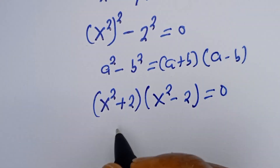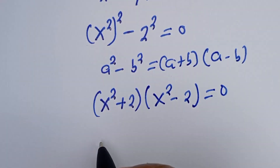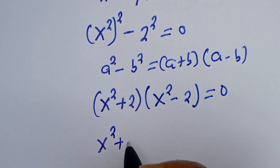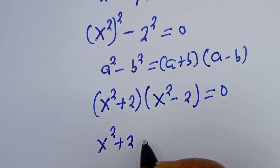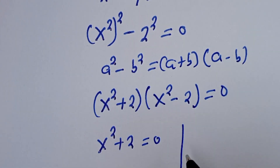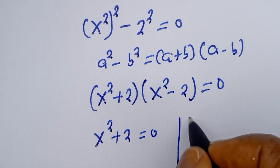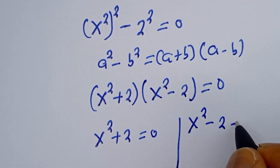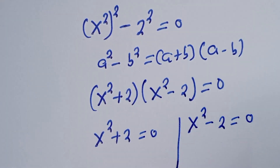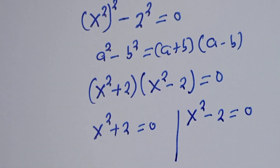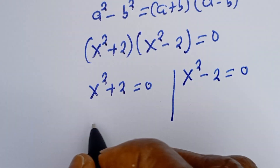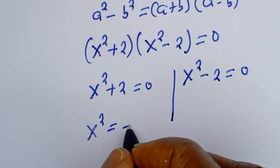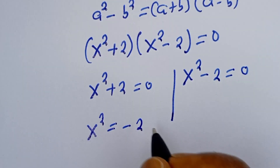Then there are two cases here. The first case is s squared plus 2 equal to 0, and the second case is s squared minus 2 is equal to 0. From the first case, we have s squared is equal to minus 2.